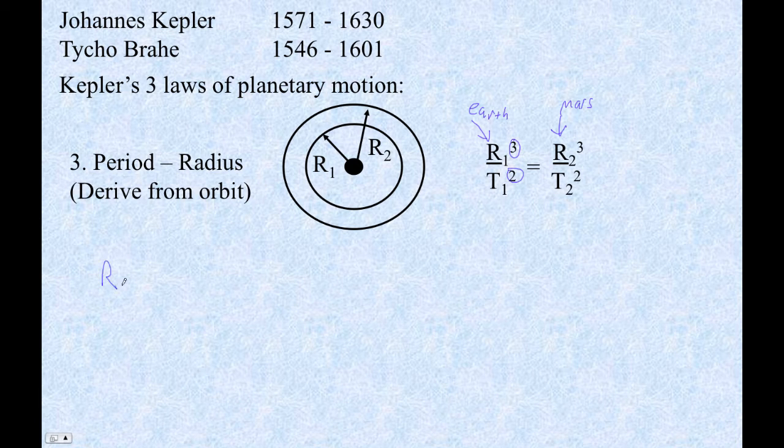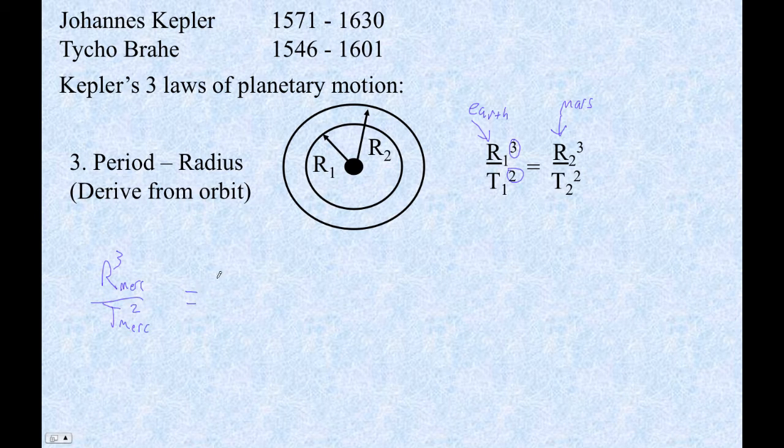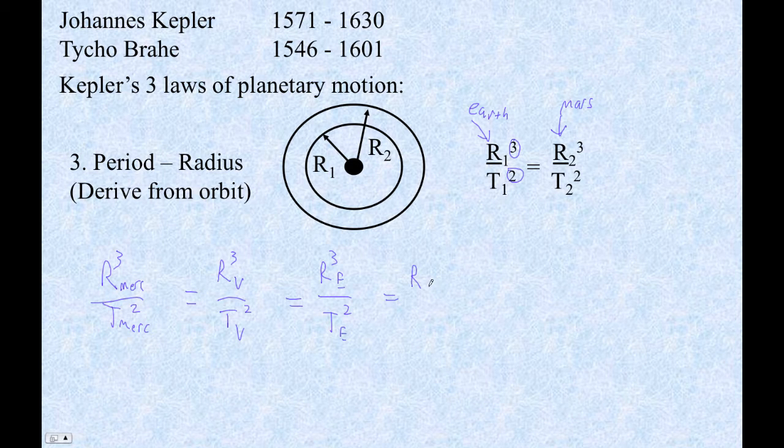So literally, the radius of Mercury to the third over the period of Mercury squared equals the radius of Venus to the third over the period of Venus squared equals the radius of Earth to the third over the period of Earth squared equals the radius of Mars to the third over, etc., etc. All of these things, they're all the same.